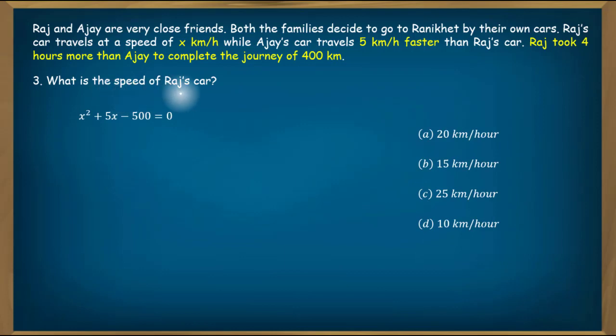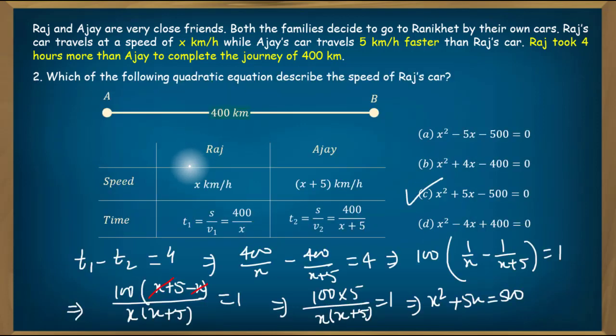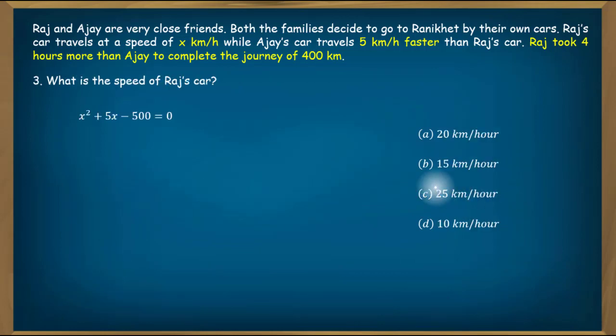Next question: What is the speed of Raj's car? We have the quadratic equation x squared plus 5x minus 500 equal to 0. We will factor this by splitting the middle term: x squared plus 25x minus 20x minus 500 equal to 0.